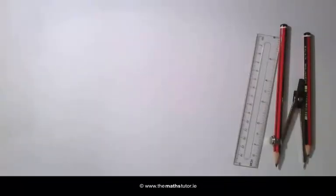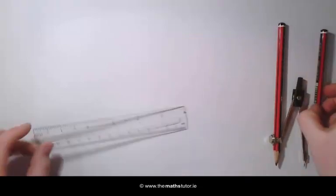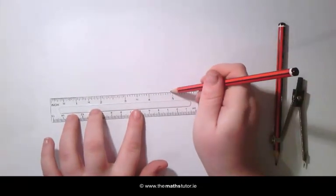We are going to construct an angle of 60 degrees without using a protractor or a set square. The first thing we do is draw a line segment of any length.